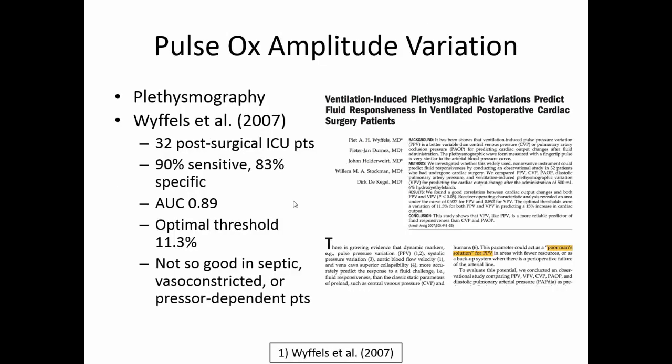There's been some research into just looking at the amplitude of the pulse ox waveform. In patients who aren't septic or vasoconstricted, it actually performs really well. Anything that limits the accuracy of your estimate of the patient's cardiac output is going to decrease the effectiveness of your test. So in patients where you have a great pulse ox waveform, you can use respiratory variation in the amplitude of the pulse ox waveform to predict fluid responsiveness — with excellent outcomes, an area under the curve of 0.9 and 90% sensitivity.